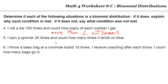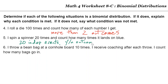Spinning a spinner 20 times and counting how many times it lands on blue: you have 20 independent events, yes-or-no outcomes, and the probability is the same — you don't know exactly what the probability of landing on blue is, but it's the same spinner each time, so the probability is consistent. This qualifies as binomial.